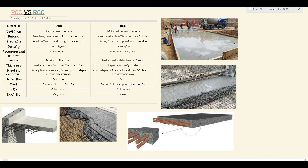Deflection means it doesn't break — it returns back to its original position after the deflection ends. For cost, PCC is economical for a span of 10 to 18 meters; beyond that it's not economical. For RCC, it's economical for a span of less than 9 meters. For units, both are measured the same way: cubic meter or cubic feet.